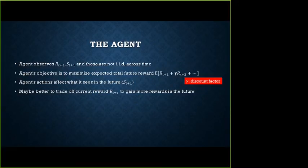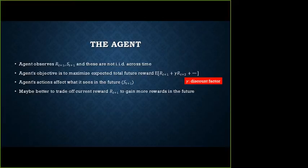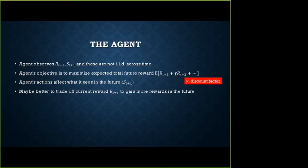The second ingredient is the agent. The agent observes the next state and the reward, and these are not IID across time. The agent's objective is to maximize expected total future reward. The agent took action A_T and got reward R_{T+1}, took another action A_{T+1} and got reward R_{T+2}, and so on. The objective is written as the expectation over all rewards, for example to infinity, where gamma is a discount factor to keep the infinite sum bounded.